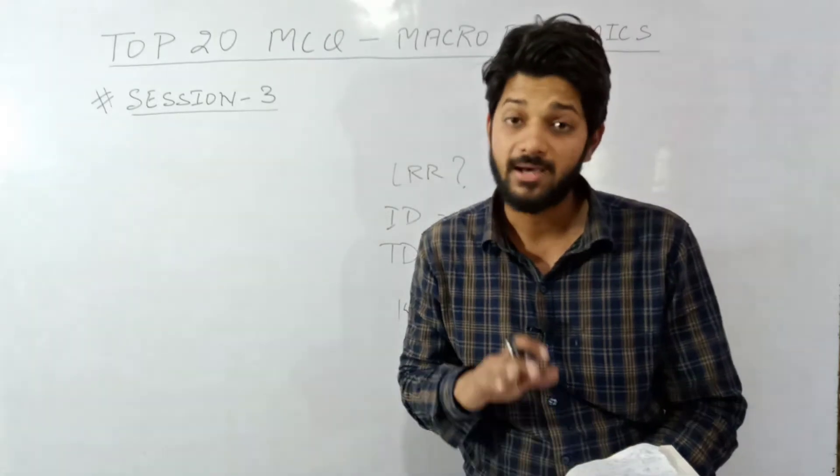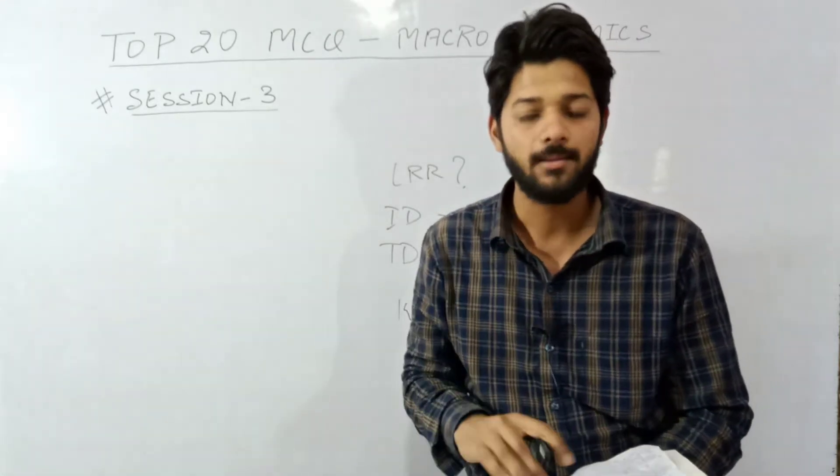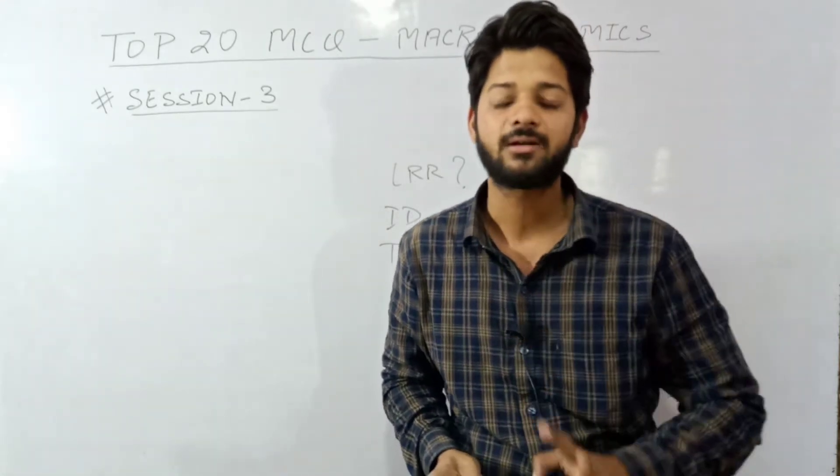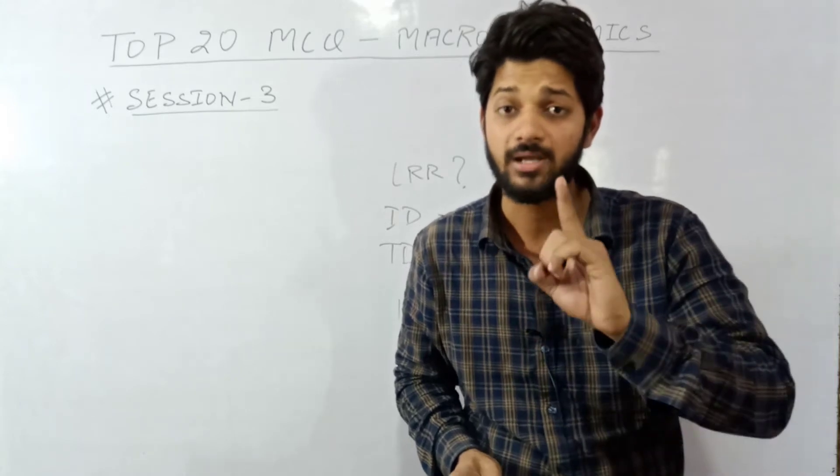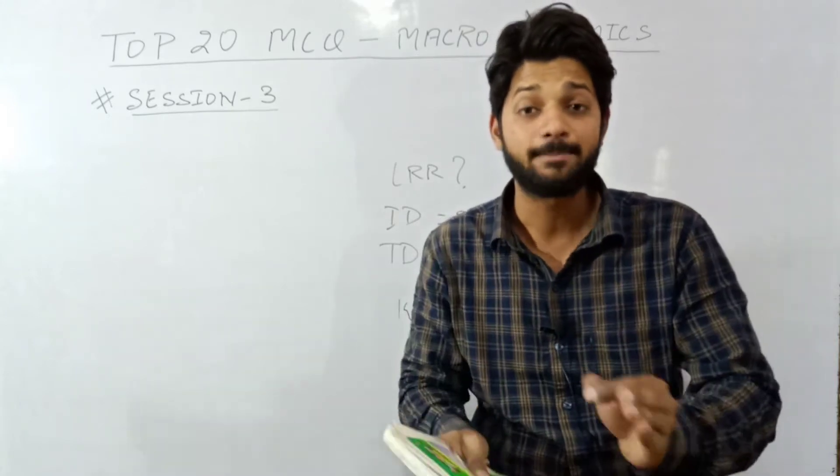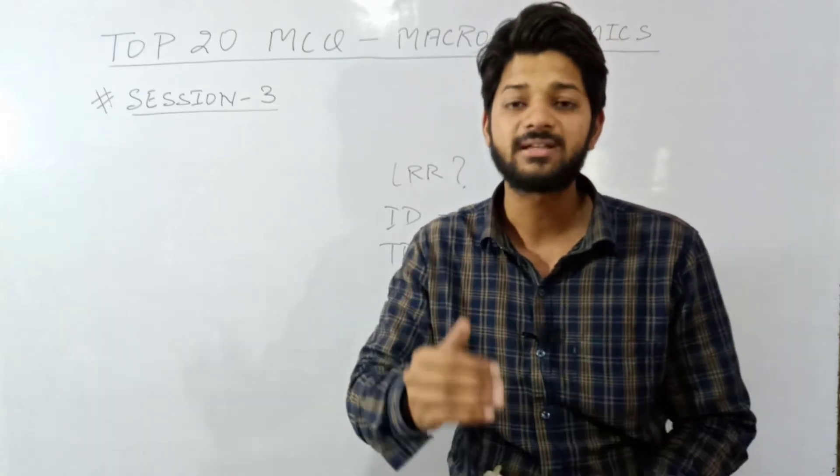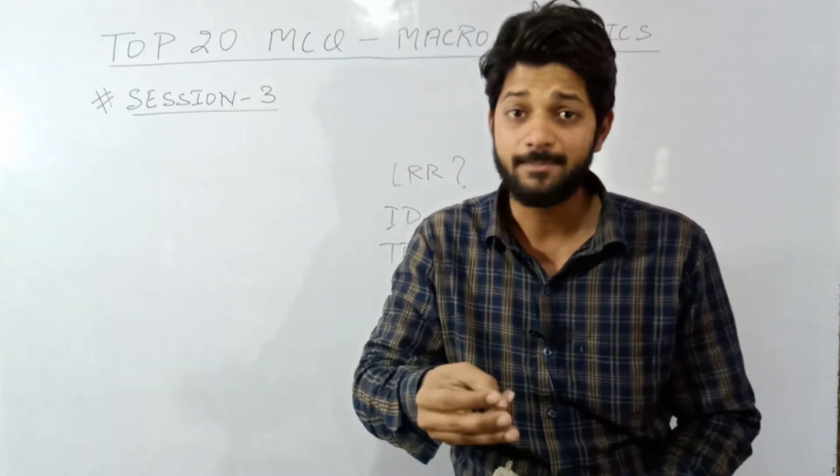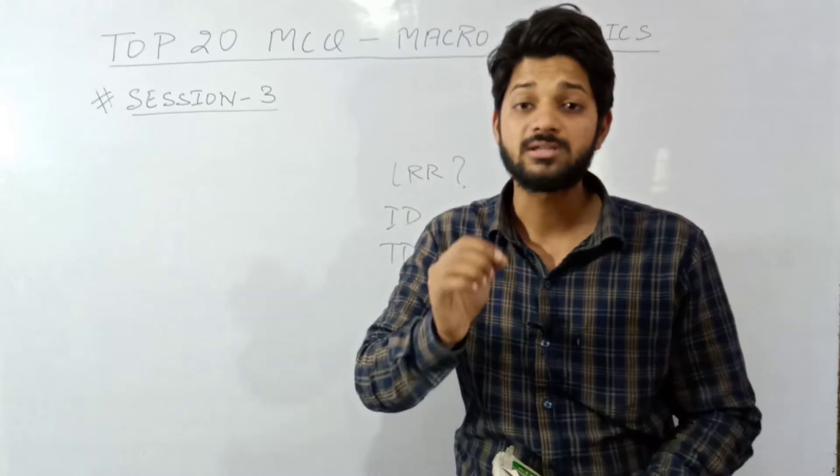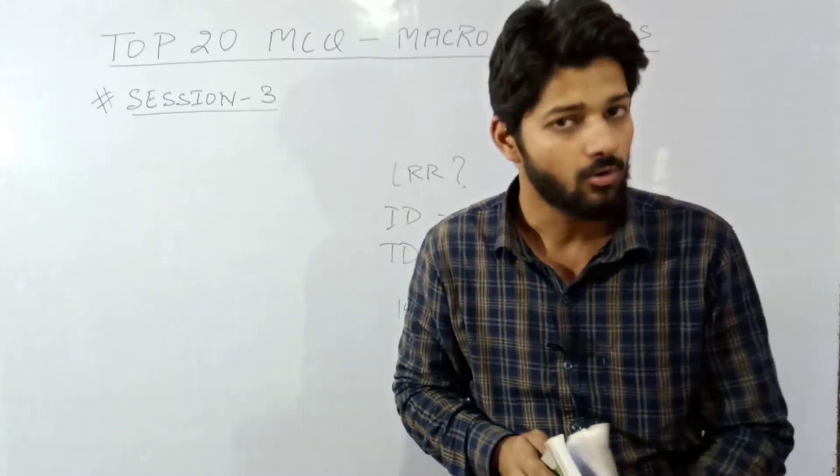Question number sixteen: nature of APC. I'm giving you four characteristics of APC. Number one, most important - APC can never be zero because there will be autonomous consumption. Second, APC can be more than one. Third, APC can be less than one. And fourth, APC can also be equal to one.